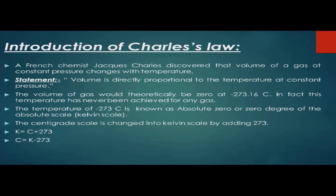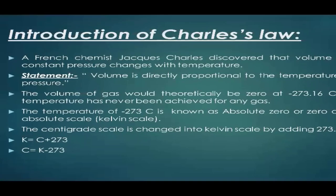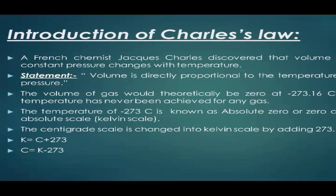We can call it the Kelvin scale. The centigrade scale is changed into the Kelvin scale by adding 273. Kelvin equals centigrade plus 273. Centigrade equals Kelvin minus 273. When we want to find Kelvin, we add 273 to the centigrade value.